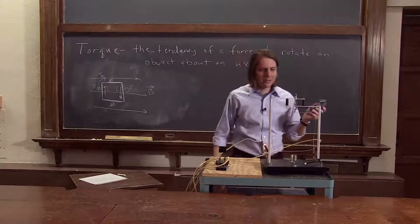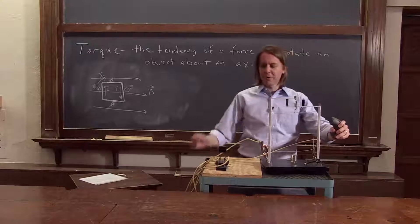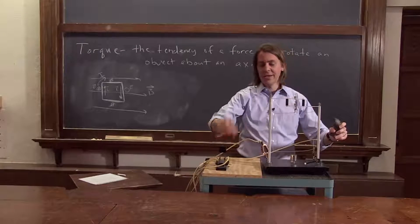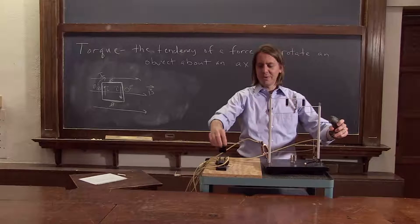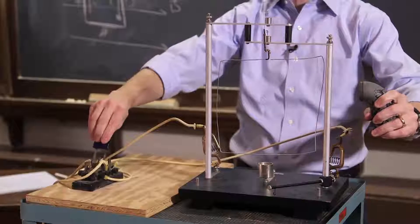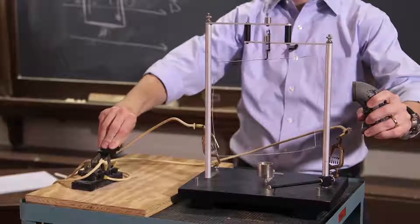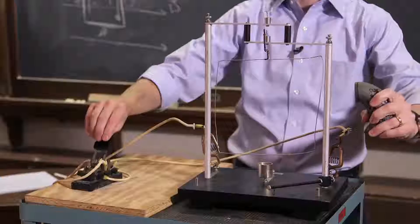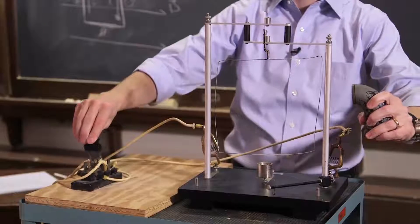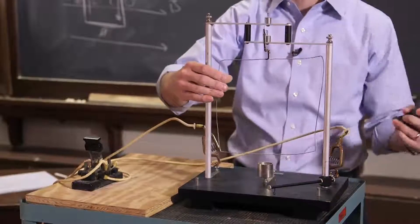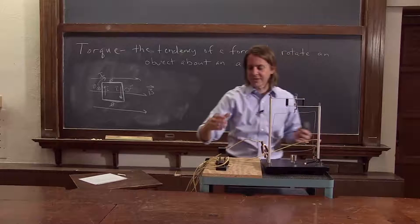Here's my big magnet. Here's the loop. Before, I made the current go this way, and it came towards me when I pulled the switch towards me. Let's do that again — pull the switch towards me, and it came one way. Now I'm going to throw the switch the other way. Sure enough, it goes the other way. So that makes sense.